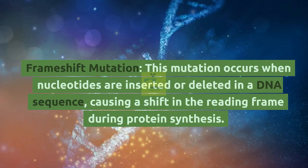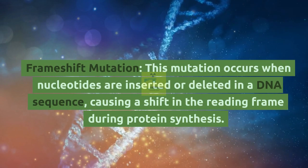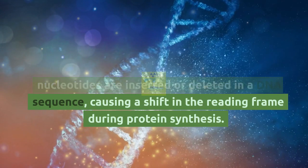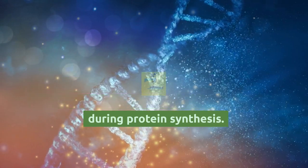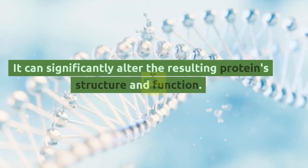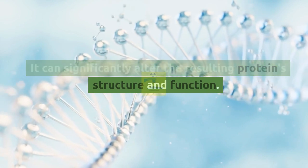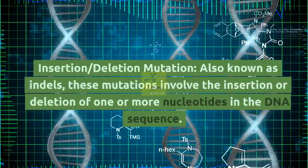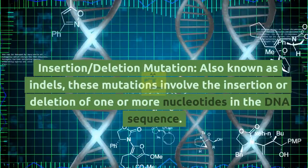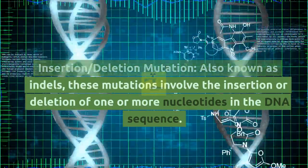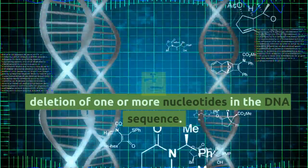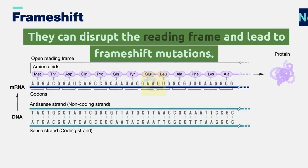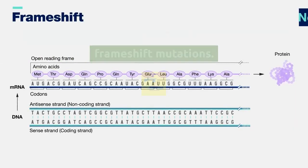A frameshift mutation occurs when nucleotides are inserted or deleted in a DNA sequence, causing a shift in the reading frame during protein synthesis. It can significantly alter the resulting protein structure and function. Insertion and deletion mutations, also known as indels, involve the insertion or deletion of one or more nucleotides in the DNA sequence. They can disrupt the reading frame and lead to frameshift mutations.